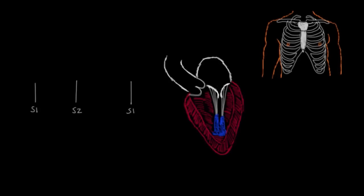Since location is a pretty big concept, I want to go over the four places that we auscultate with our stethoscope. The first is in the second intercostal space — also known as the right upper sternal border — and this is the aortic area. On the other side, in the same intercostal space, we have the pulmonic area, also called the left upper sternal border. Then in the fourth intercostal space we have the tricuspid area. And finally, in the fifth intercostal space at the midclavicular line, this is the mitral area.